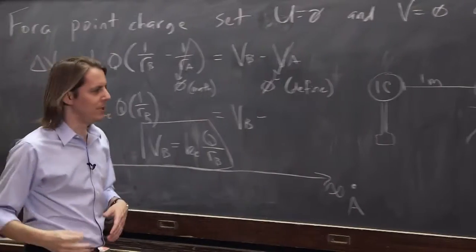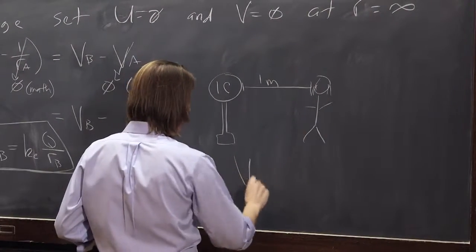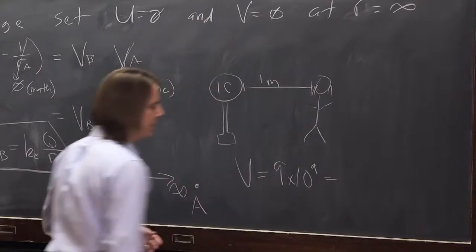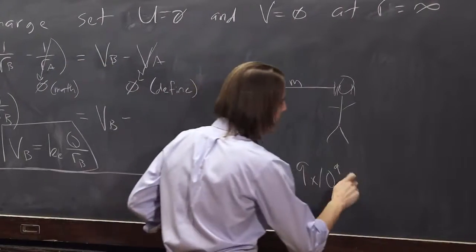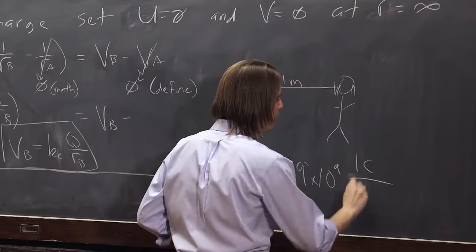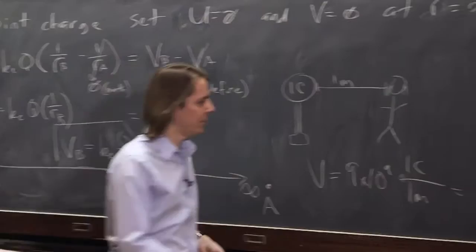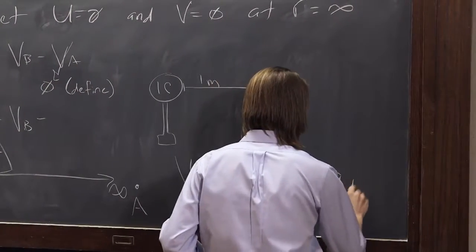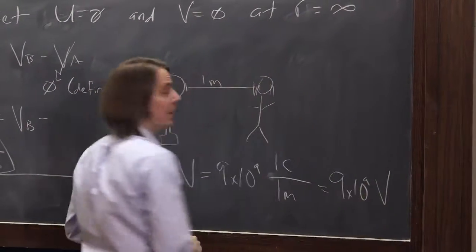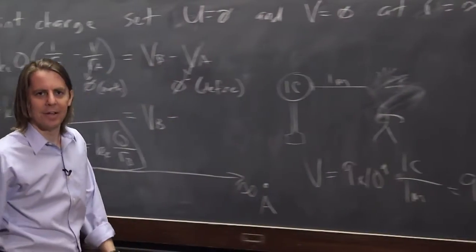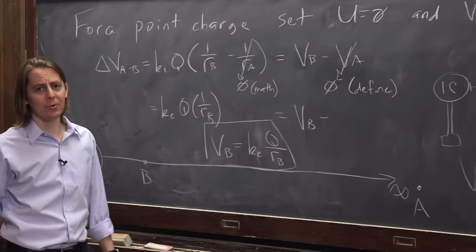What potential would I be at just a meter away? So the potential here would be K, 9 times 10 to the 9, Q, 1 coulomb over 1 meter, would be at 9 billion volts. We would definitely have some of this going on, or dead, right? 9 billion volts if you get a meter from a coulomb.